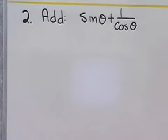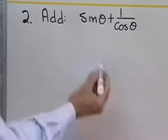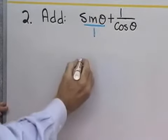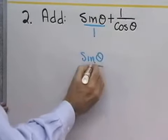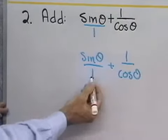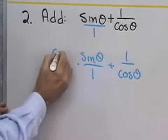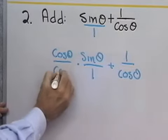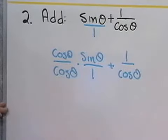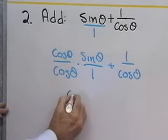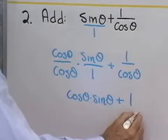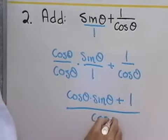Our next problem: let's add sine theta and 1 over cosine theta. I'll start by reviewing fractions — sine theta is the fraction sine theta over 1. So I take sine theta over 1 plus 1 over cosine theta and find the least common denominator, which is cosine theta. I'll multiply the numerator and denominator of the first fraction by cosine theta, giving cosine theta times sine theta plus 1, all divided by cosine theta.